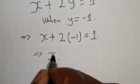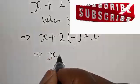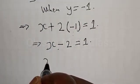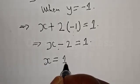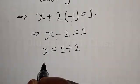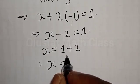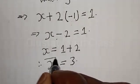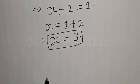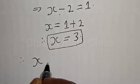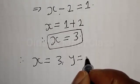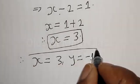This implies s minus 2 equals 1, since 2 times minus 1 is minus 2. Then s is equal to 1 plus 2 — that is, the minus 2 crosses to the other side and becomes plus 2. Therefore s is equal to 3. We've got the value of s to be equal to 3. Therefore the value of s and y is: s equals 3 and y equals minus 1. That is our final answer.